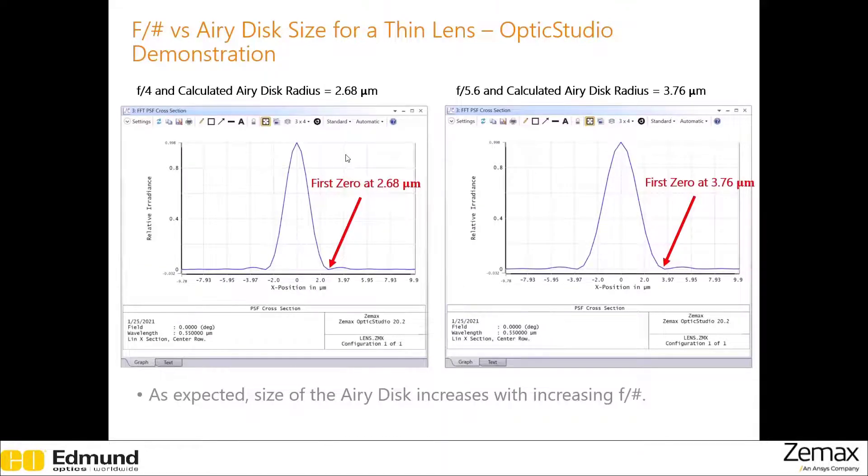Now, if we increase the f-number to 4, we see a spot size of 2.68 microns.